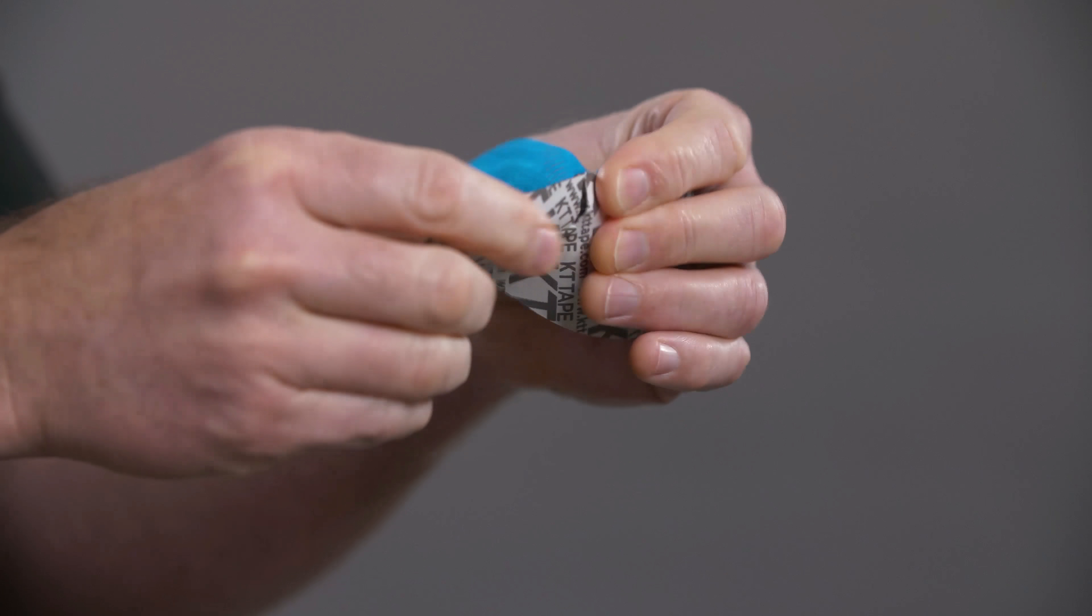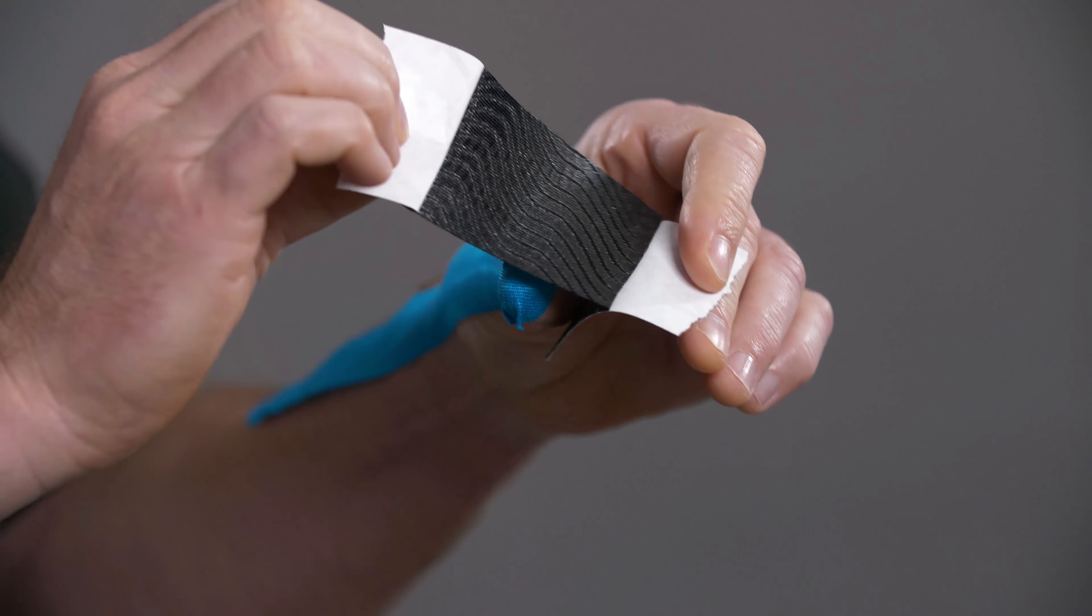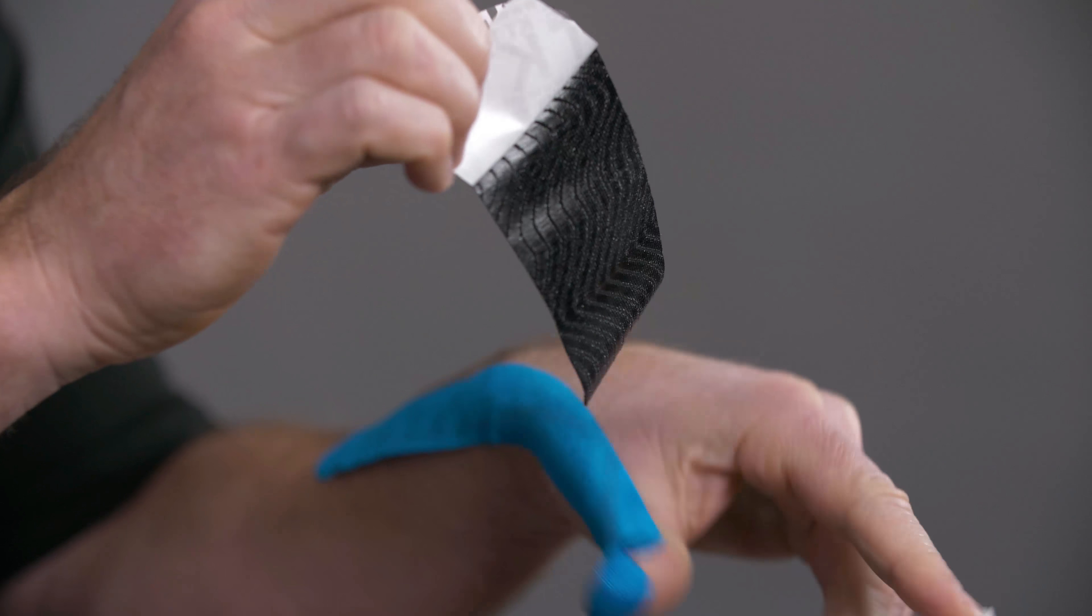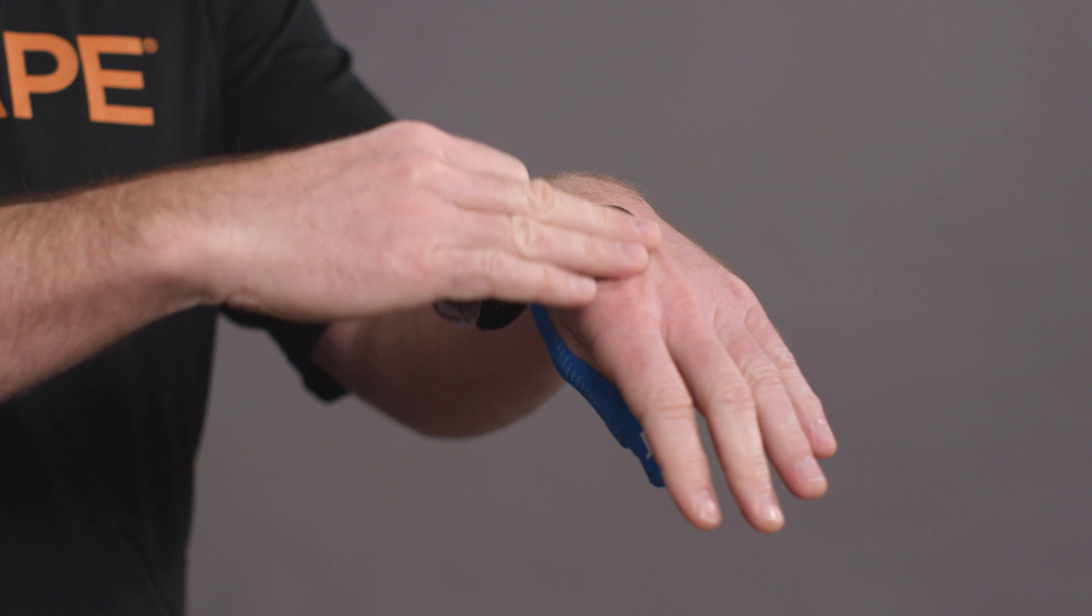Take the half strip and tear the paper backing two inches from one end. With the wrist remaining in a downward position, apply this anchor with no stretch over the back of your hand, directing the strip over the base of your thumb and toward your palm.